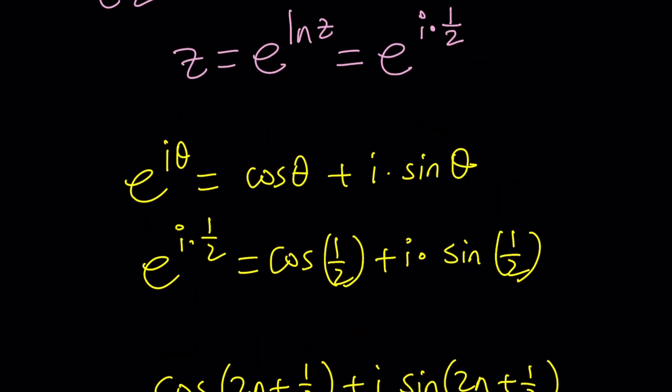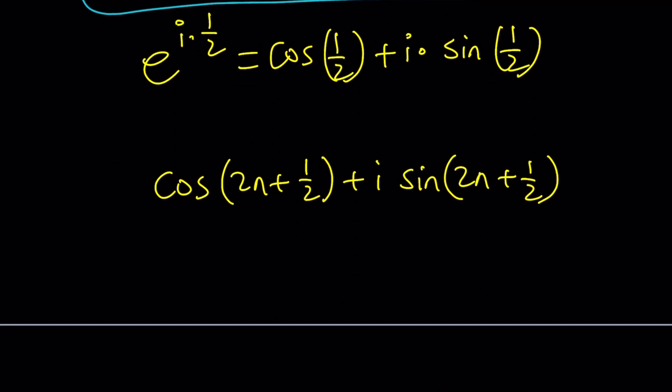So, remember, Euler's formula, super helpful in these situations. So, we were able to get z in standard form like a plus bi. Great, because that's the name of this channel and that's super important, right?